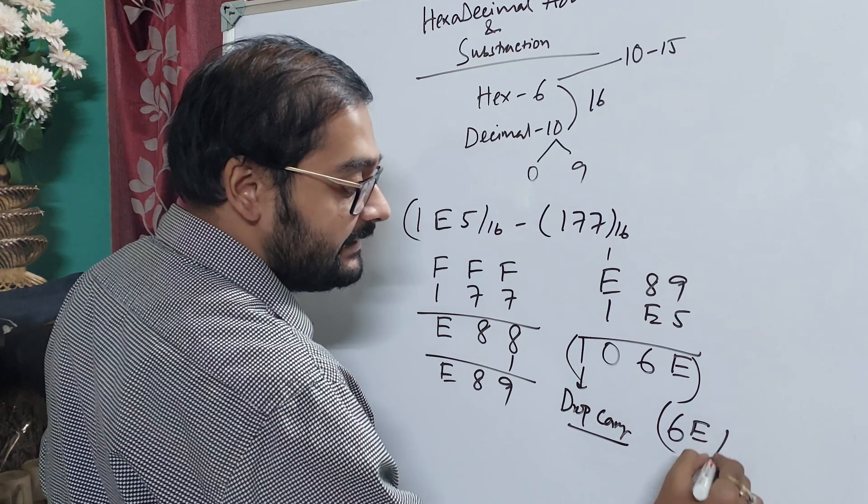So 9 plus 5 is 14, 14 means E. We can write E. So 8 plus E. Basically 8 is 8 and E is 14, so we get 22. 22 minus 16 means 6, carry 1. E is 14, 14 plus 1 is 15, 15 plus 1 means 16. 16 minus 16 means 0. So carry 1, the final result is 6E. So thank you.